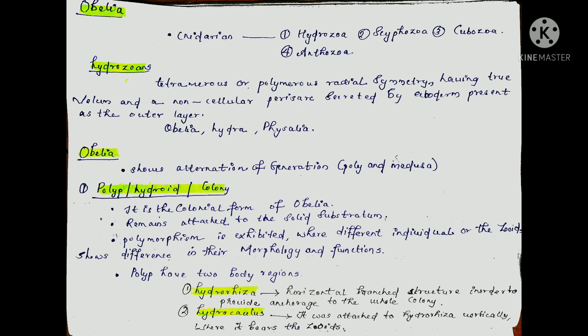Cnidaria is divided into four classes: Hydrozoa, Scyphozoa, Cubozoa, and Anthozoa. Hydrozoa includes forms showing polymorphism and radial symmetry. Hydrozoa possess a true hydrovelum — a noncellular hydrovelum. An example of Hydrozoa is Obelia.